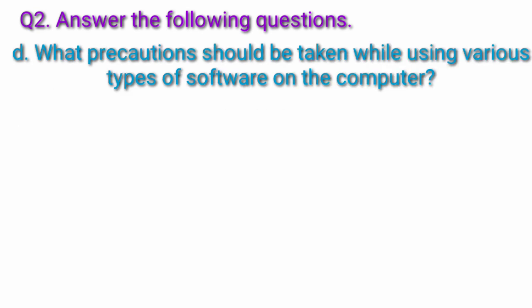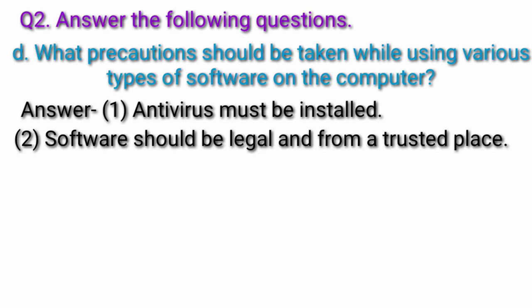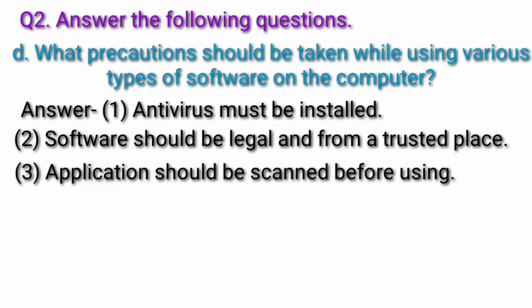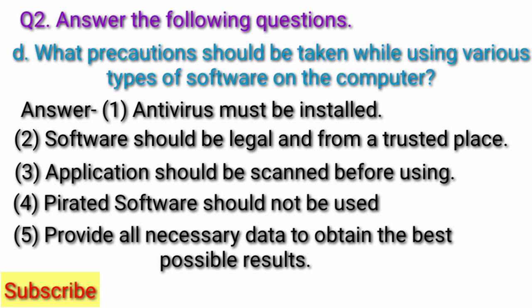Question d: What precautions should be taken while using various types of software on the computer. Answer: Antivirus must be installed. Software should be legal and from a trusted place. Application should be scanned before using. Pirated software should not be used. Provide all necessary data to obtain the best possible results.